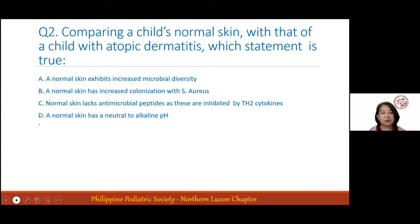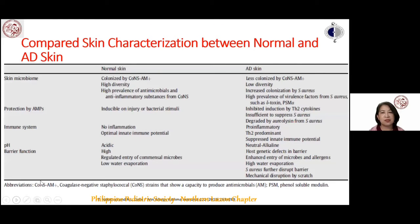Normal skin is highly colonized by commensals with high diversity, whereas AD skin has less commensal colonization, low diversity, and increased Staphylococcus colonization. Antimicrobial peptide production is inducible in normal skin but inhibited by TH2 cytokines in AD skin. The immune system is intact in normal skin whereas AD skin is always pro-inflammatory, predominantly TH2. Normal skin is acidic while AD skin is neutral to alkaline, and barrier function is intact in normal skin but compromised in AD.